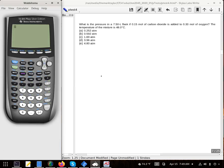What is the pressure in a 7.50 liter flask if 0.15 moles of carbon dioxide is added to 0.33 moles of oxygen and the temperature of the mixture is 48 degrees Celsius?